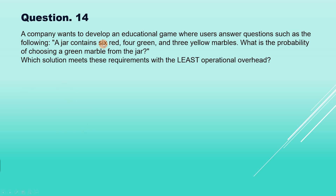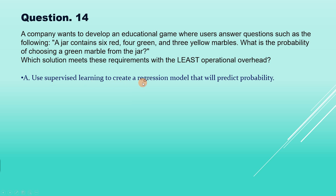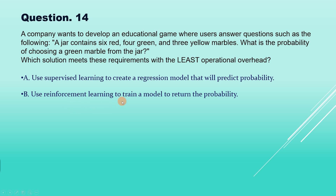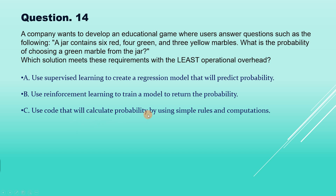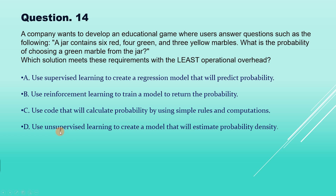Now question number 14. A company wants to develop an educational game where users answer questions such as: a jar contains 6 red, 4 green and 3 yellow marbles — what is the probability of choosing a green marble? Which solution meets these requirements with the least operational overhead? Options: A, use supervised learning to create a regression model; B, use reinforcement learning to train a model; C, use code that calculates probability using simple rules and computations; D, use supervised learning to estimate probability density.